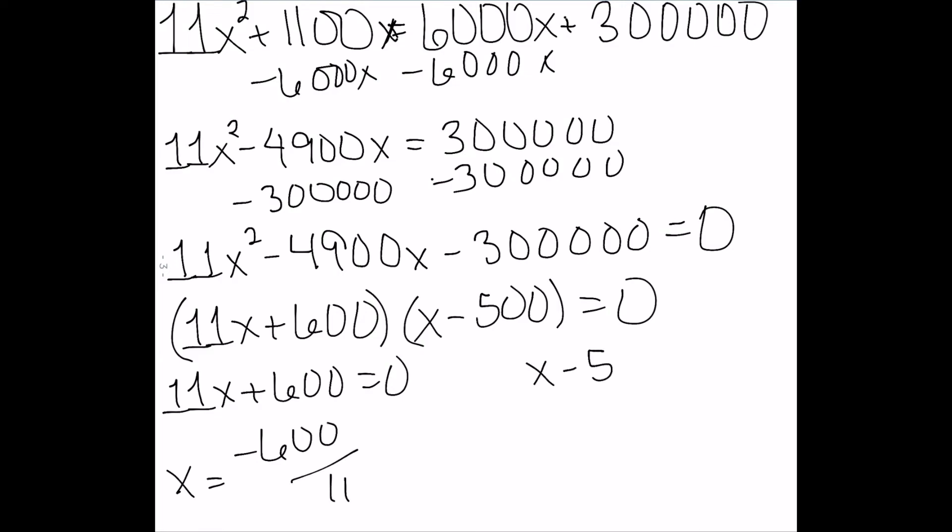Or x minus 500 is equal to zero, and solving that gives me x equal to 500. Since we're talking about speeds, this first one doesn't make sense because we can't have a negative speed. So the original flight was 500 miles per hour.